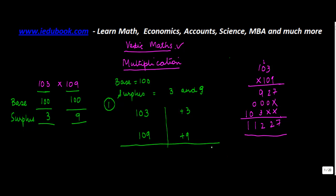Step 2 is you multiply the surplus of 1 and 2, so basically you will multiply +3 and +9. So 9 times 3 gives you 27, and plus into plus gives you a plus sign. So this is basically your step 2: you've done a multiplication of the surpluses.